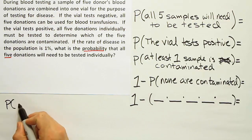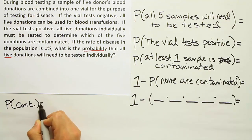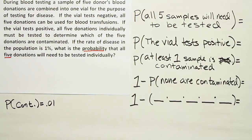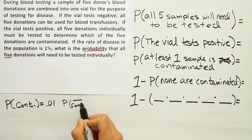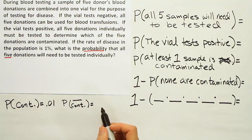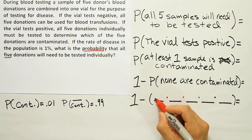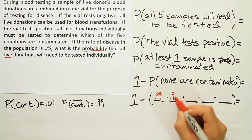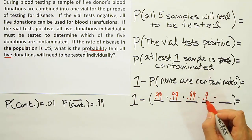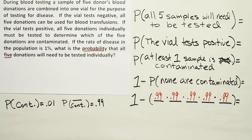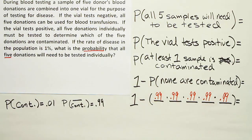The problem tells us the probability of being contaminated is 1%, or 0.01. So the probability that a sample is not contaminated is 1 minus 0.01, which equals 0.99, or 99%. Since these blood donors are taken randomly from the population and are unrelated, we assume independence — so we can just multiply straight across. The probability that none of the five are contaminated is 0.99 multiplied five times.